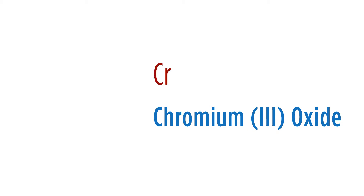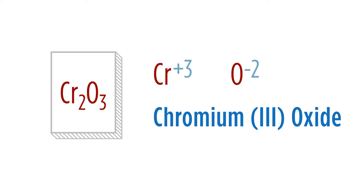Let's try another one: chromium(III) oxide. We know it's Cr plus 3 and oxygen negative 2. We need to balance this — we'll need two chromiums, bringing the charge to plus 6, and three oxygens, since 3 times negative 2 gives negative 6. We balance the charge, giving us Cr2O3 as the correct formula for chromium(III) oxide.